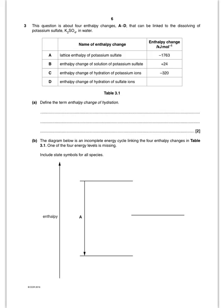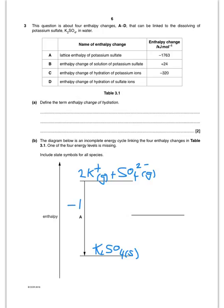The first thing is to find the enthalpy change of hydration. The enthalpy change of hydration is the enthalpy change for one mole of gaseous ions forming one mole of aqueous ions. Now I need to link those four enthalpy changes. We have a large lattice enthalpy for potassium sulfate, as expected. At the bottom we have K2SO4 solid, formed from 2K+ gaseous plus SO4²⁻ gaseous, and this change is minus 1763 kJ mol⁻¹.